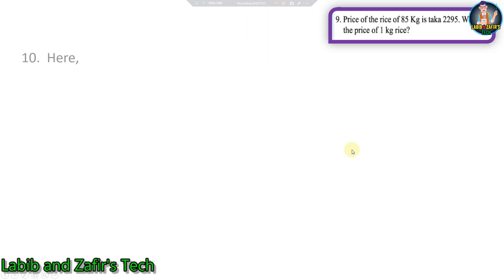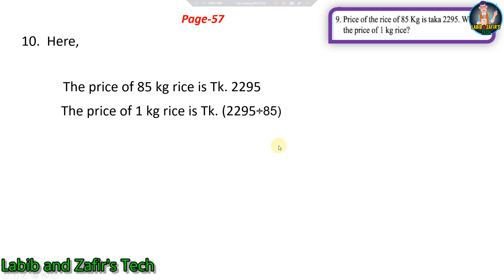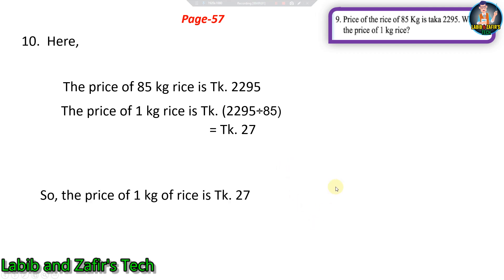Problem ten from page 57: the price of 85 kg of rice is taka 2,295, what is the price of 1 kg of rice? We can see the price of 85 kg rice is given and we have to find the price of 1 kg. The price of 1 kg rice is taka 2,295 divided by 85, that is taka 27.